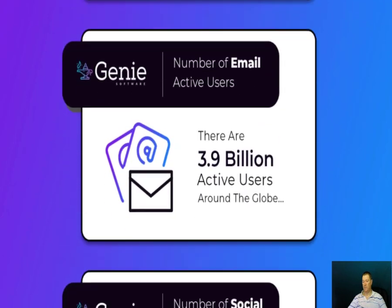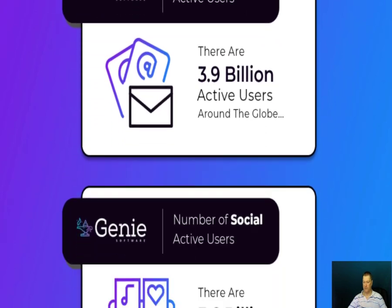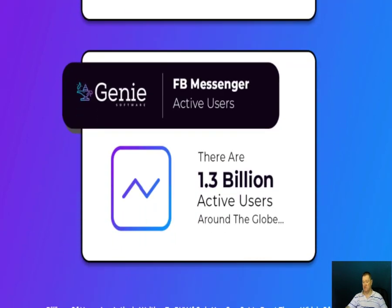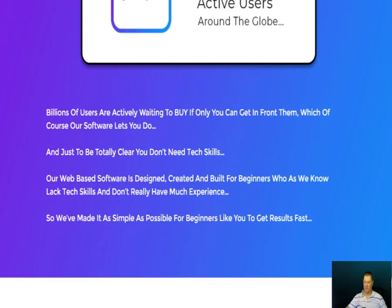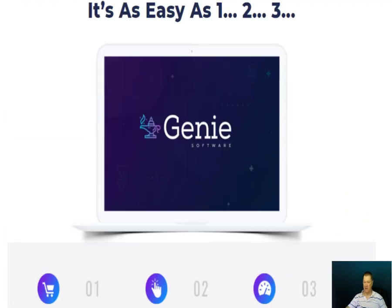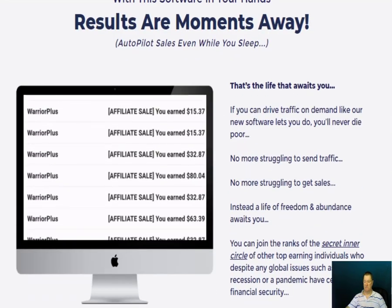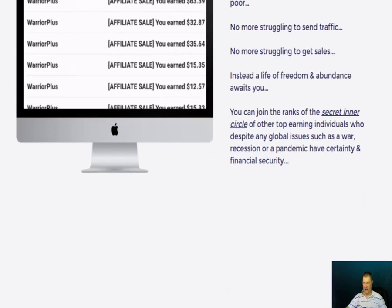There are 3.5 billion active users around the globe on messenger, 3.9 billion active users for email, and 3.6 billion for social media — Instagram, Facebook, and all the others — with Facebook Messenger alone having 1.3 billion active users. So if you can tap into all these traffic sources, you can actually drive real traffic results.